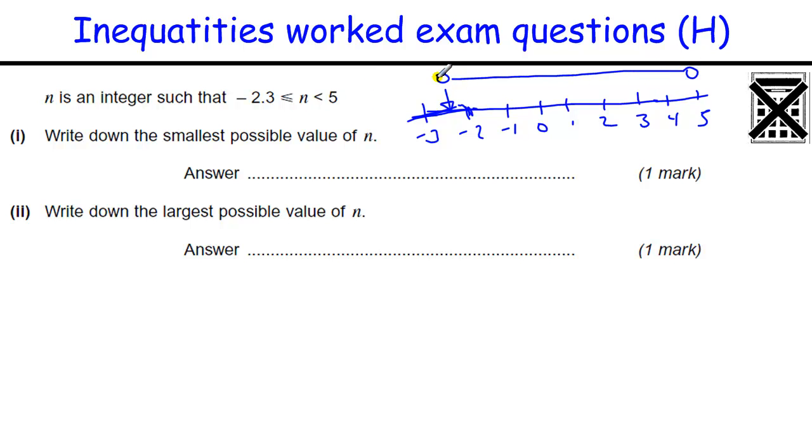It can include minus 2.3, but it doesn't include 5. So we're not including 5. Write down the smallest possible value of n, but n is an integer, that means a whole number, so that's only these numbers here. So the smallest it could be is minus 2. It can't be minus 3. Write down the largest possible value of n. Well, n can't be 5, it doesn't include 5, so the next biggest number is 4.